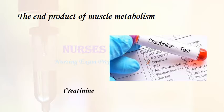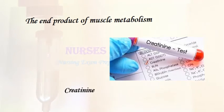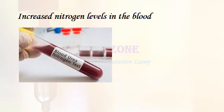The end product of muscle metabolism: creatinine. Increased nitrogen levels in the blood: azotemia.